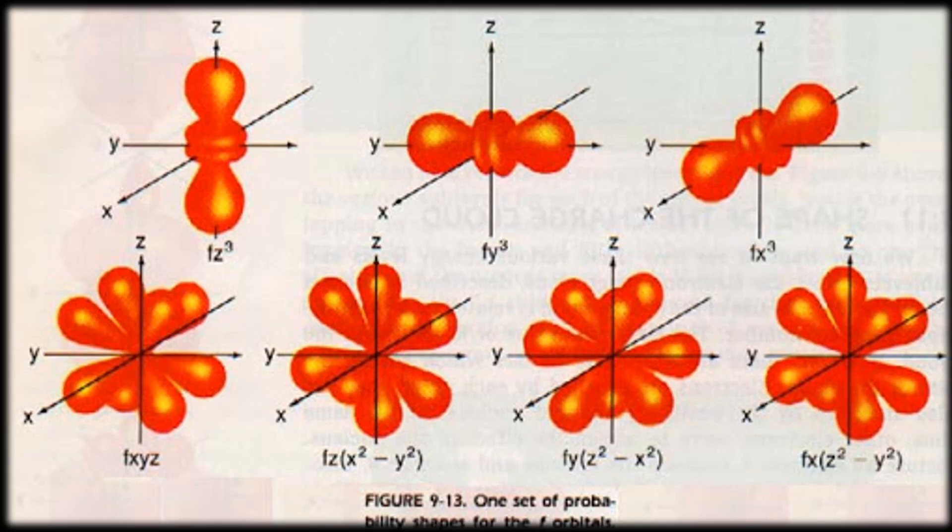There will be 7 f orbitals. So in summary: 1 s orbital, 3 p orbitals, 5 d orbitals, 7 f orbitals. These are the names of the f orbitals as previously shown.